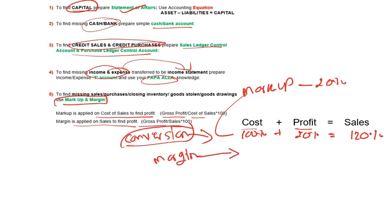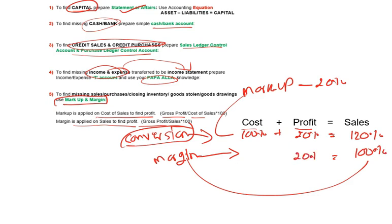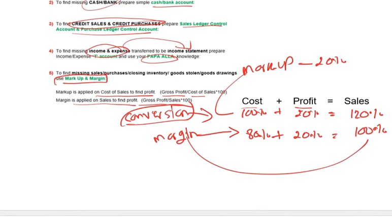But if it is a margin, you assume your sales is one hundred percent, not cost. So if profit is twenty percent, your cost would be eighty percent. If you remember this, we will apply this knowledge in a few examples.